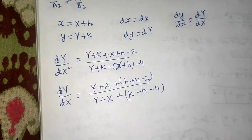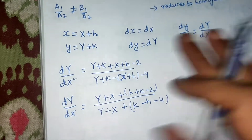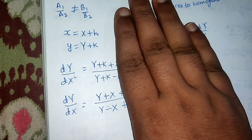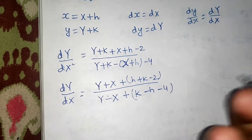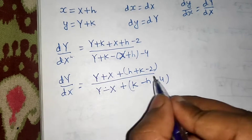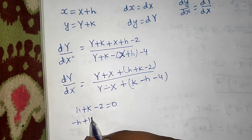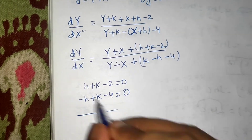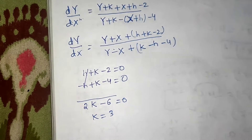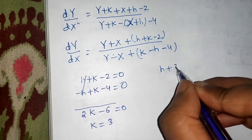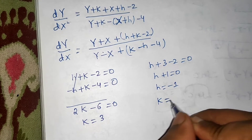If we make the constant brackets zero, we're left with a homogeneous equation — that's our goal. So we choose h and k such that the brackets vanish, solving the simultaneous equations: h + k − 2 = 0 and −h + k − 4 = 0. Adding them: 2k − 6 = 0, so k = 3. Substituting back: h + 3 − 2 = 0, giving h = −1.